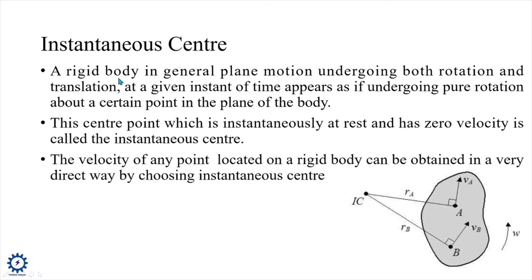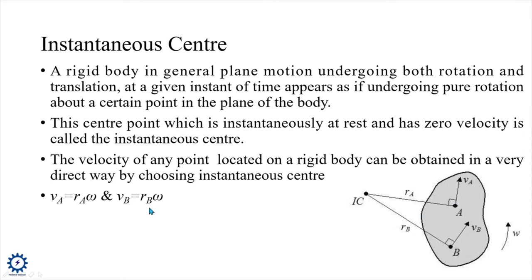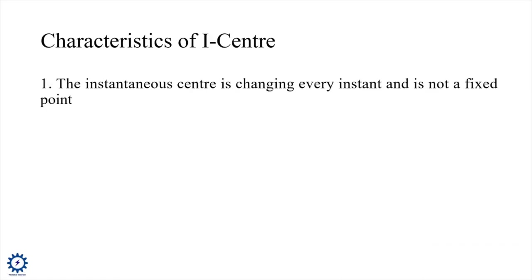Why are we studying Instantaneous Center when studying rotational motion? The reason is we can determine the velocity of any point located on a rigid body by choosing the Instantaneous Center. If you can locate the Instantaneous Center, you can determine the velocity of any point. For point A, velocity va equals ra times omega, where ra is the distance from the IC to the line of action of velocity at A. Similarly, vb equals rb times omega.